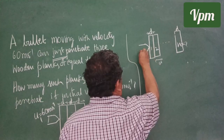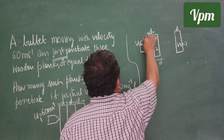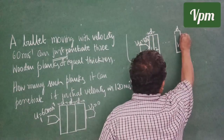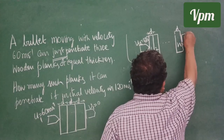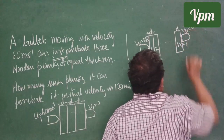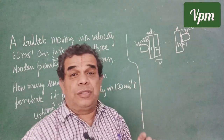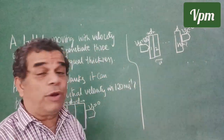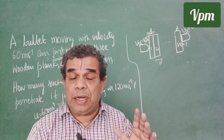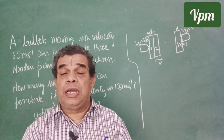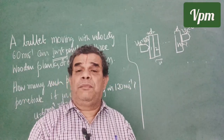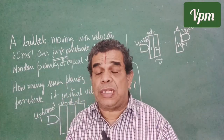The bullet's initial velocity u₂ = 120 meters per second, and again 'just' penetrates means the final velocity v₂ = 0. What we need to calculate is n, the number of planks. This is the overall picturization of the given problem. Now, how do we solve this?